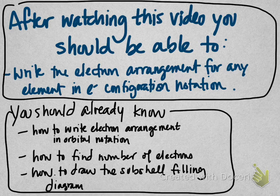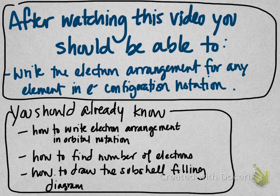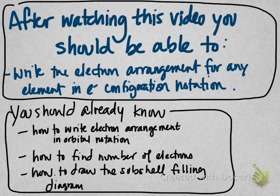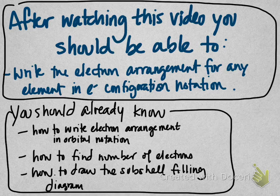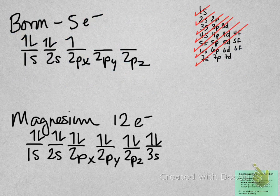What you already need to know coming in is how to write electron arrangement in orbital notation, how to find the number of electrons in any atom of any element, and how to draw the subshell filling diagram. So you know how to write electron configuration in orbital notation, good!